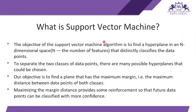The objective of the Support Vector Machine algorithm is to find a hyperplane in an N-dimensional space — where N is the number of features — that distinctly classifies the data points. For example, if you are predicting a person's salary using three features like age, gender, and qualification, SVM will choose a hyperplane in that three-dimensional space.